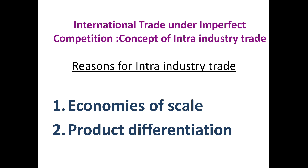That is, each firm tries to specialize in one or few varieties of the product rather than producing all varieties, and imports the other varieties from other countries. Product differentiation is provided as another reason, as trade in the modern era involves differentiated products rather than homogeneous products. Since consumer tastes differ in numerous ways and no country in the world can produce all the varieties of the good, some pattern will obviously be governed by intra-industry trade.